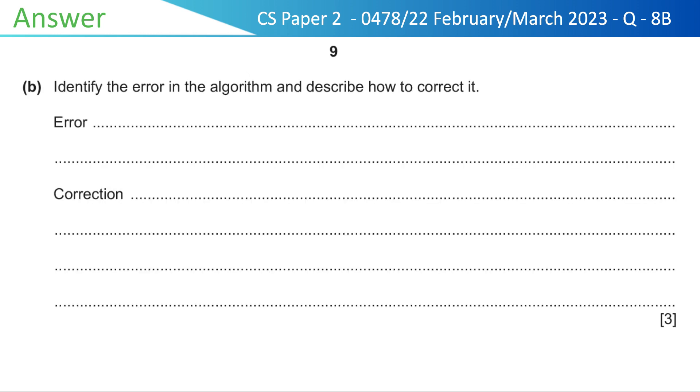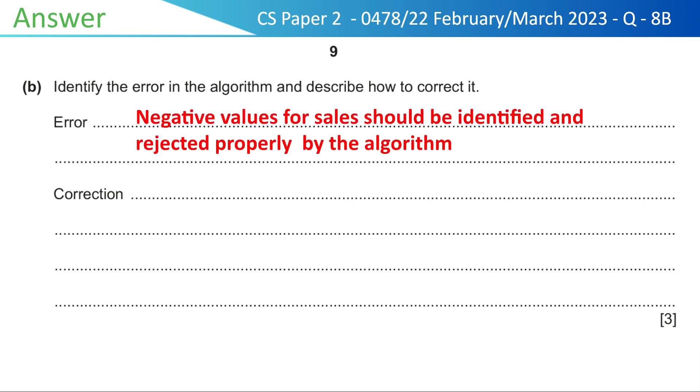Great. We have identified the error in the code and its solution as well. Error is that negative values for sales should be identified and rejected properly by the algorithm. And its solution is that, add a decision box after the input box to reject negative values.